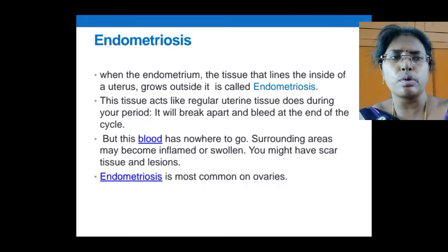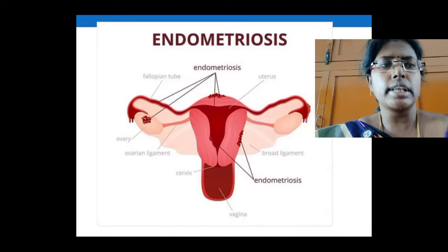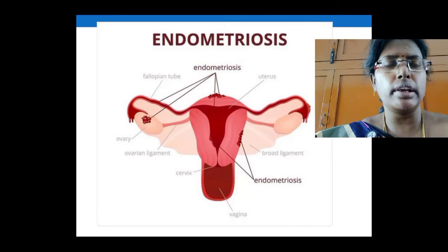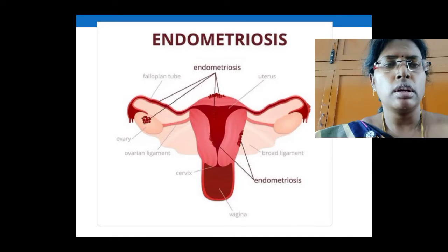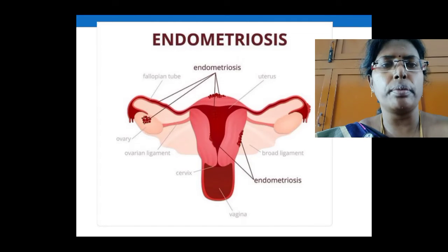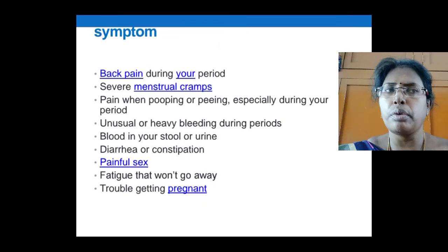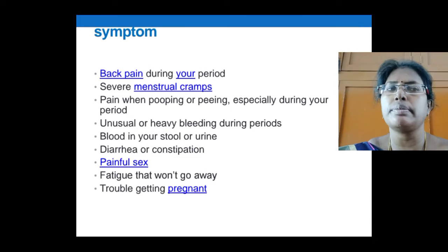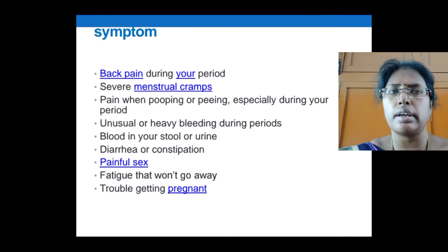Endometriosis is most common on the ovaries. As you can see in this diagram, the endometrium layer lining the uterus grows outside the uterus — outside the walls — near the fallopian tube or in the ovaries.